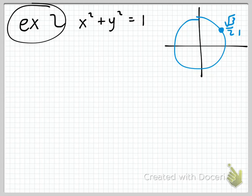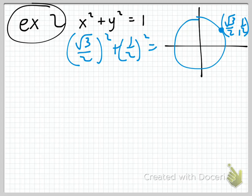We want to find the slope of the tangent line when x equals radical 3 over 2. Because we have a unit circle, if x is radical 3 over 2, then y is 1/2. Confirming that works: (√3/2)² plus (1/2)² equals 3/4 plus 1/4, which does equal 1. That checks out.